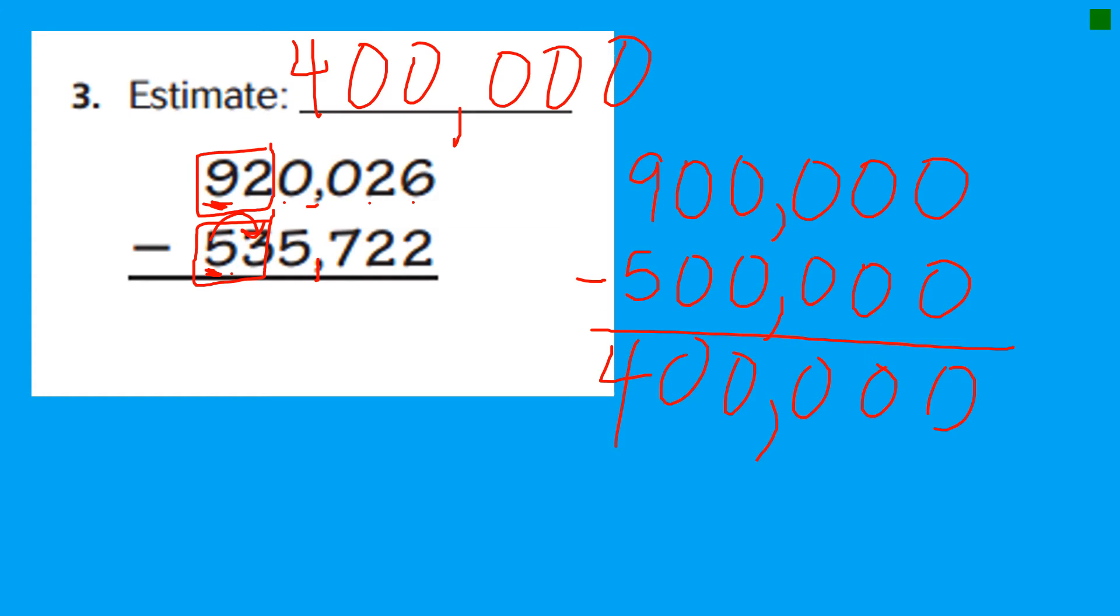So the estimate is 400,000. Now let's subtract. 6 minus 2. I know that one's 4. 2 minus 2. 0. I knew that one too.